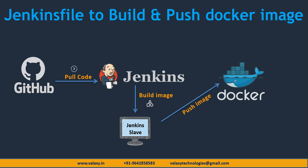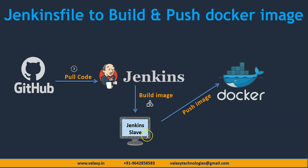Hey guys, welcome back. In previous lectures we have seen how to set up Jenkins master and slave configuration and how to run a Maven build on the slave system. In this lecture we are going to take a Node.js application, containerize it and commit it to hub.docker.com. For this we are going to set up a new slave system dedicated to only Docker-related builds. We will convert the Node.js application into a Docker image using a Jenkinsfile.